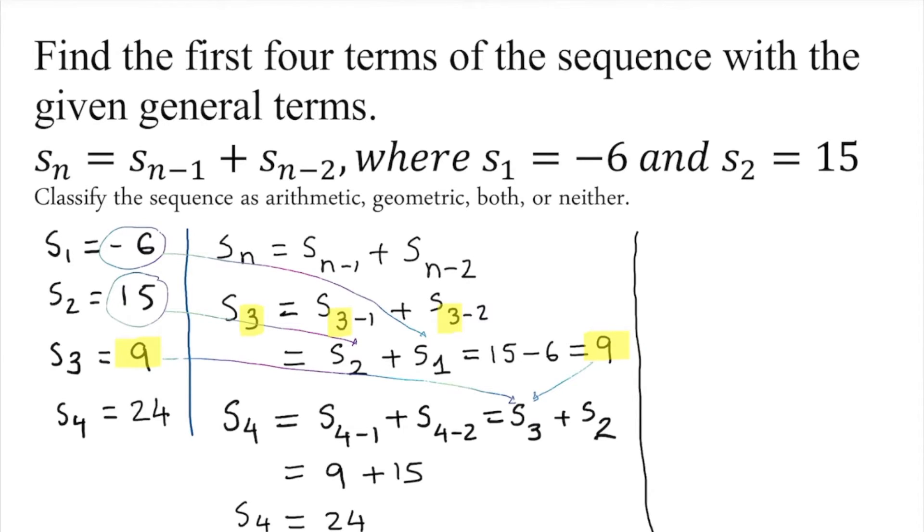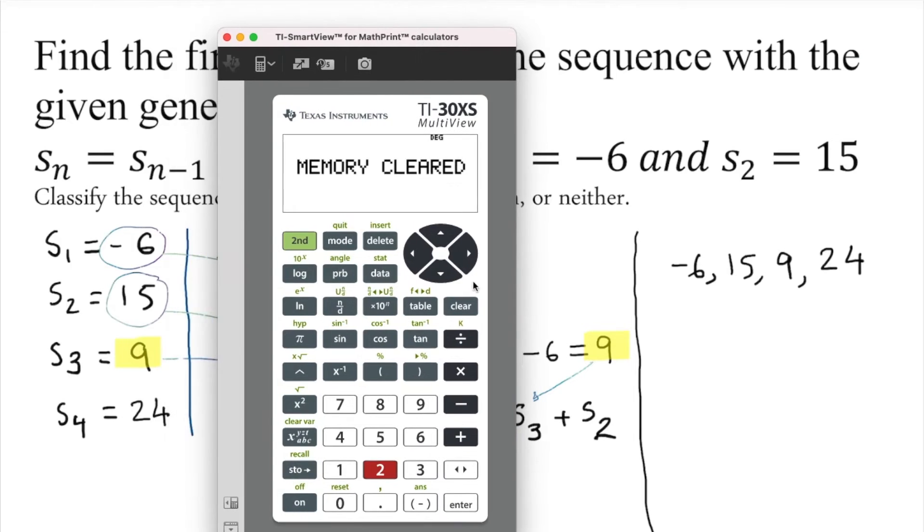Let's take a look at what sequence we have so far: negative 6, 15, 9, 24. This is the sequence. What kind of sequence is this? Arithmetic? Well, I can use the calculator here quickly to show. If we subtract, 15 minus negative 6 is 21, and 9 minus 15... We don't have any common difference, so this is not arithmetic.